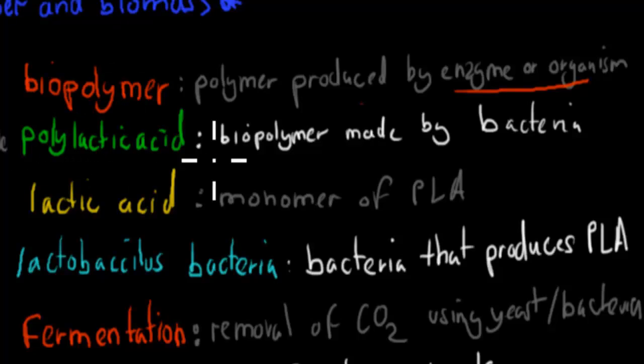And polylactic acid, that was an example of a biopolymer, because it was made by bacteria. And lactic acid, that's the monomer that makes polylactic acid. So if we have lots of lactic acid monomers, we can make polylactic acid. Lactobacillus bacteria, this was the bacteria that was actually used to produce polylactic acid.